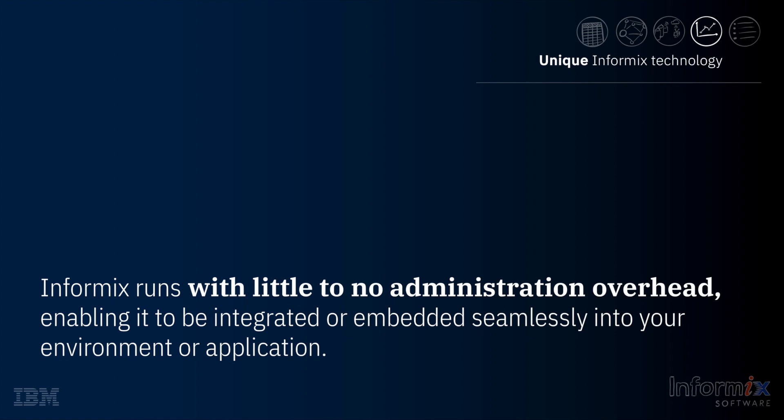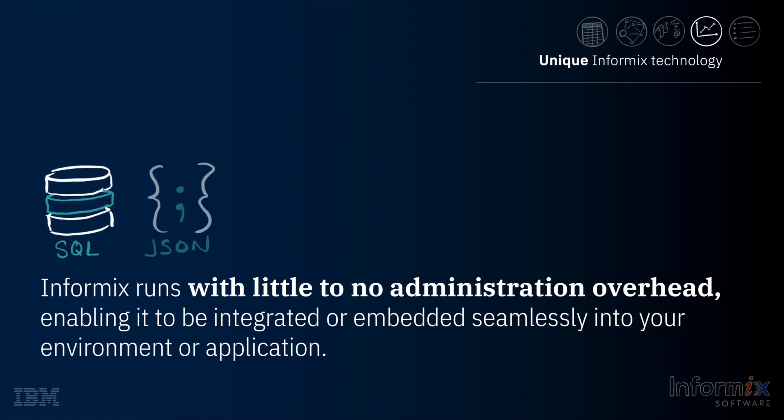Whether you have large or small data processing needs, Informix just works with little to no ongoing maintenance or support. Both traditional data types and non-traditional data types such as JSON, often called Internet of Things data, can be stored in their native format and used together from within a single database and from SQL or NoSQL applications.